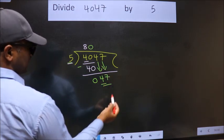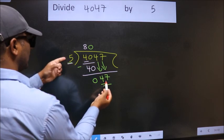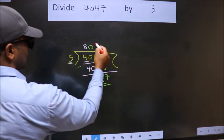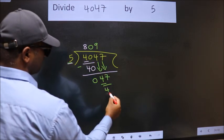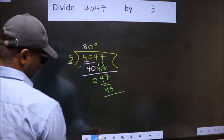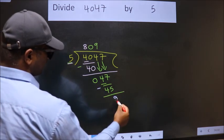So, 47. A number close to 47 in the 5 table is 5 nines, 45. Now we subtract, we get 2.